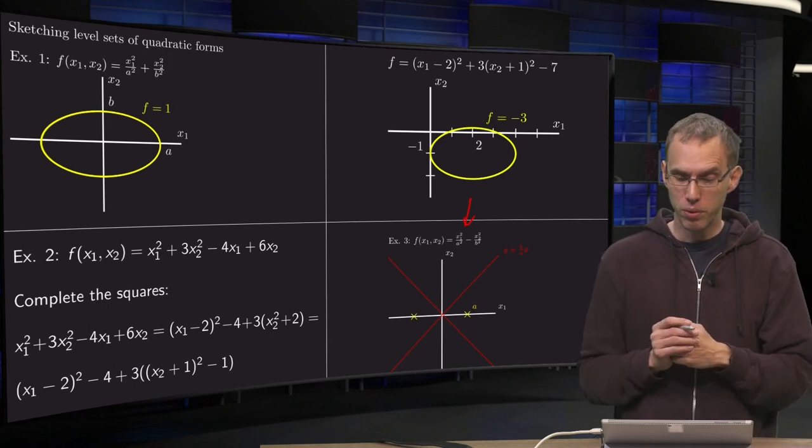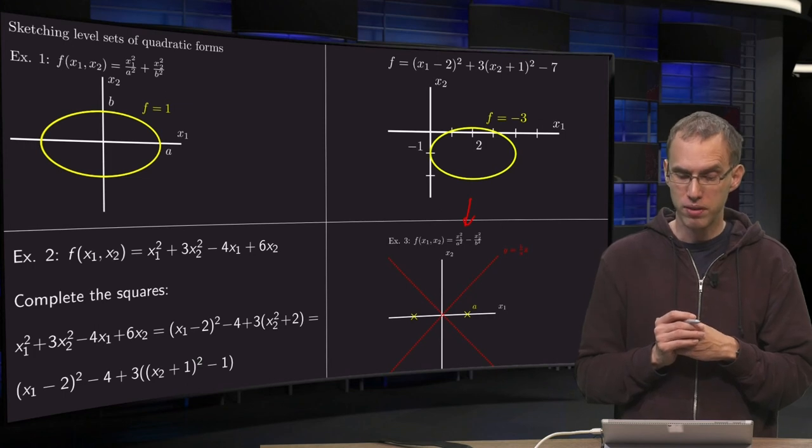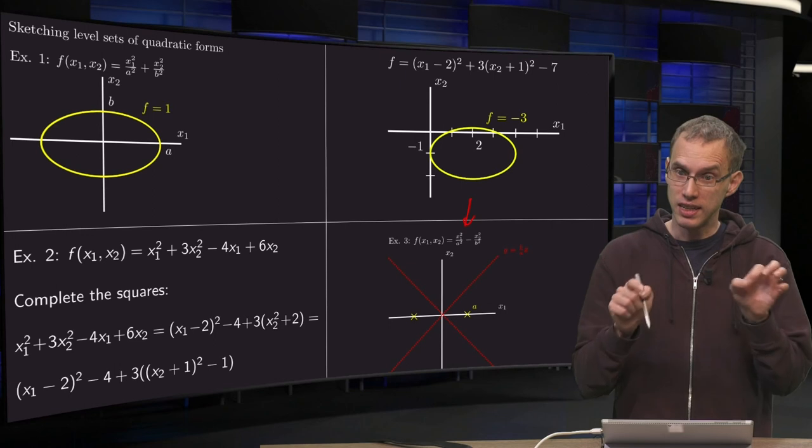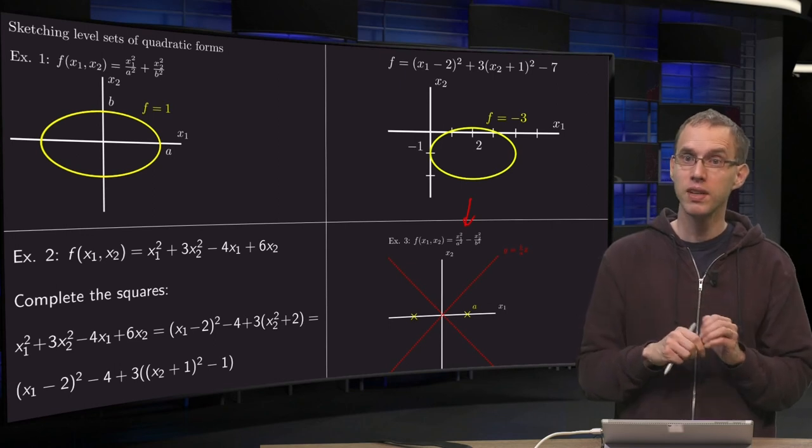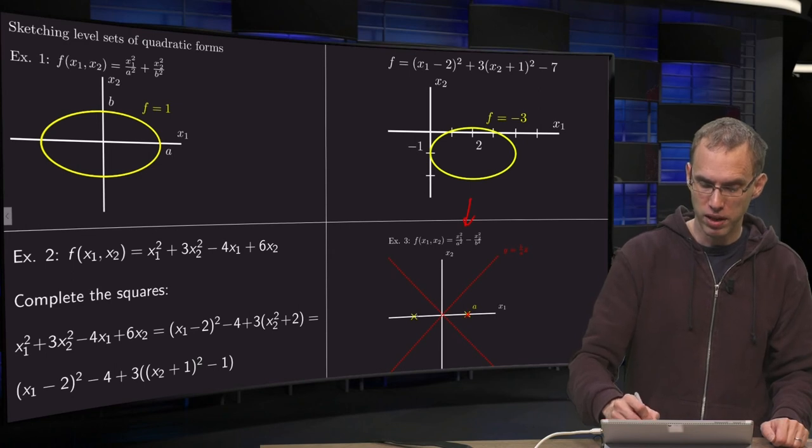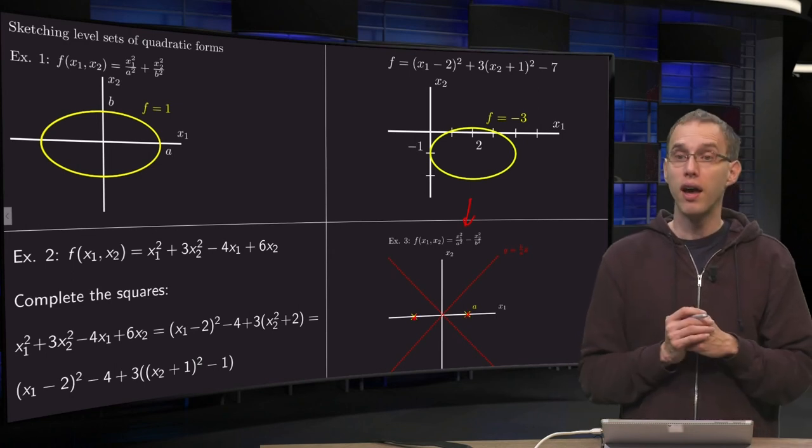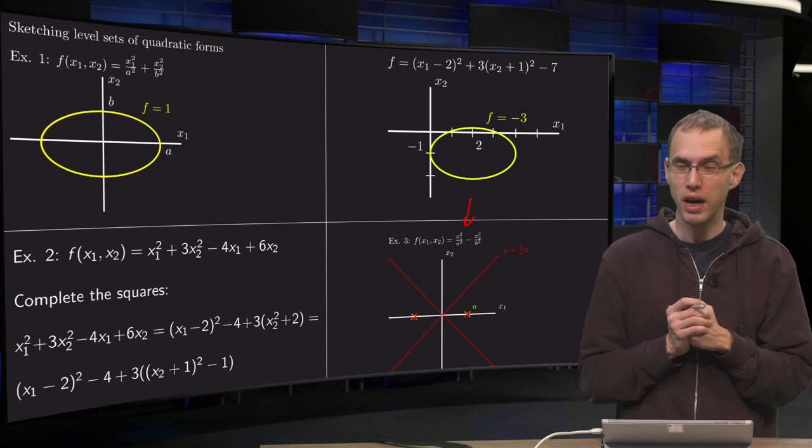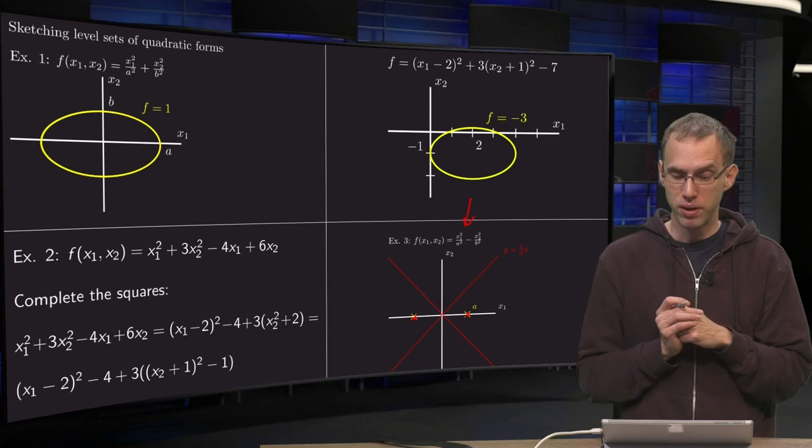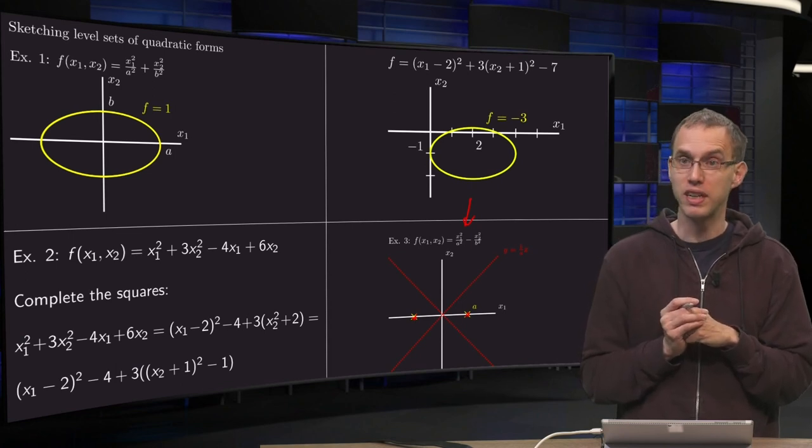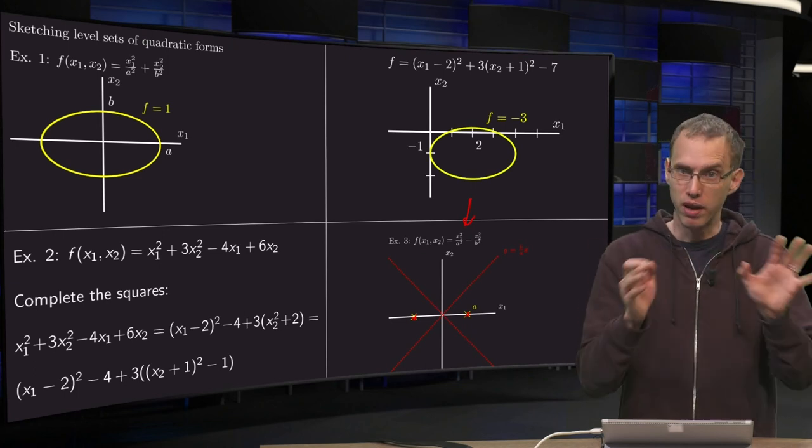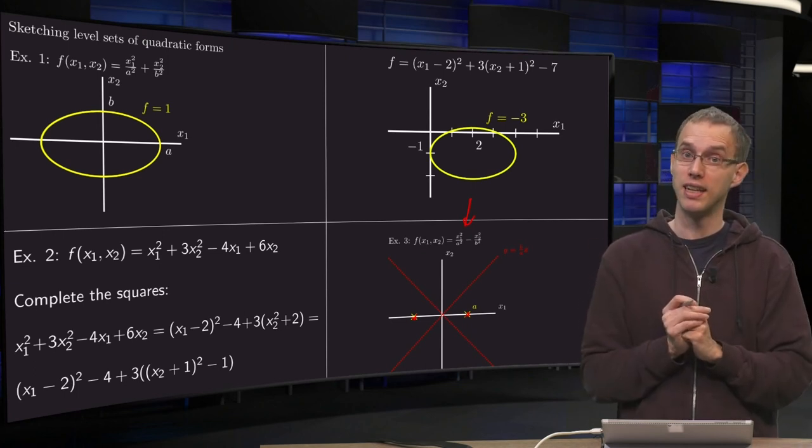Well, first of all, we are going to set this, for example, equal to 1. And what happens if you intersect the x1 axis? That means x2 equals 0, so your x1 equals plus a over here or minus a over there. What happens if you try to intersect the x2 axis and set it to 1? Then you get minus x2 squared over b squared equals 1, and that's impossible because you have negative equals 1, so we will have no intersections with the x2 axis.